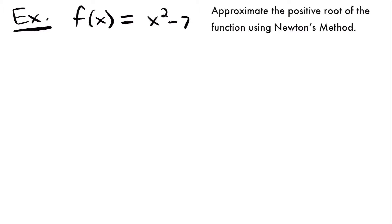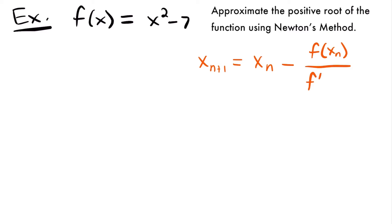Newton's method states that if we want to find a better approximation of x, we call that x sub n plus 1, and it's equal to x sub n — the previous approximation or guess at the x-intercept — minus the function evaluated at that value of x, divided by the first derivative of our function evaluated at that value of x. This is Newton's method. The first thing we need to do is find our first guess for the approximate value of the root, which is our value of x sub n.